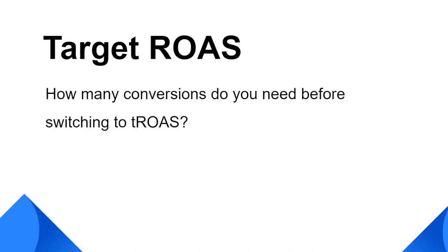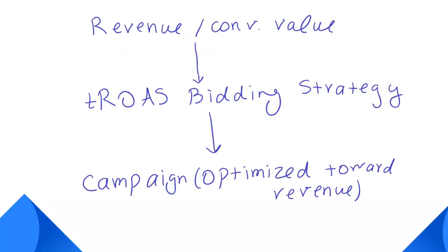Target ROAS is one of the most popular bidding strategies among advertisers. In this value-based bidding strategy, you feed Google Ads with your revenue data and Google Ads will optimize your campaigns toward revenue to maximize the conversion value within the target ROAS that you set.